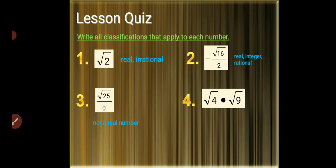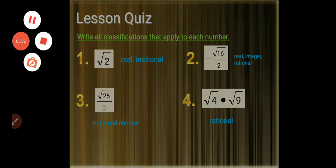Number 3: square root of 25 over 0 is not a real number. Number 4: square root of 4 times square root of 9 is rational. That's all. Thank you.